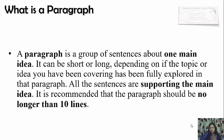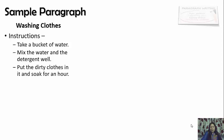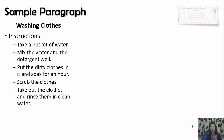So let's go ahead. We have a simple paragraph and this paragraph is about washing clothes. Now how to wash clothes - instructions are given here. Let's look at these instructions. First, take a bucket of water. Mix the water and the detergent well. Put the dirty clothes in it and soak for an hour. Scrub the clothes. Take out the clothes and rinse them in clean water, and then wring out water and put them to dry. So these are the instructions for washing clothes. Now you are supposed to write a paragraph using these instructions.